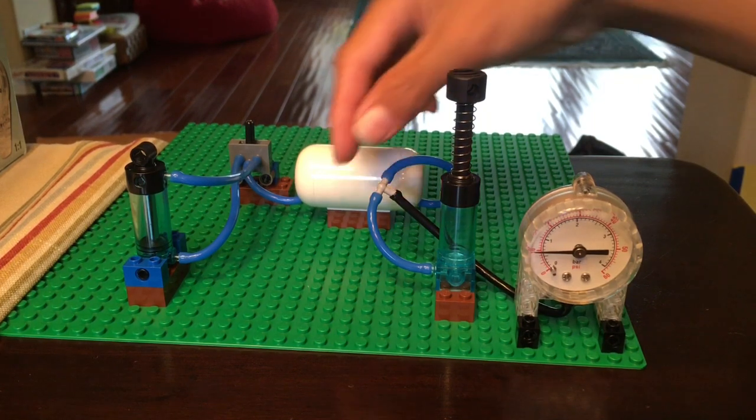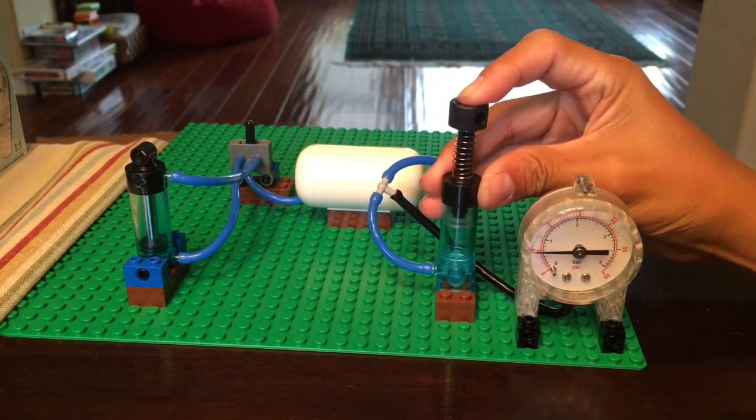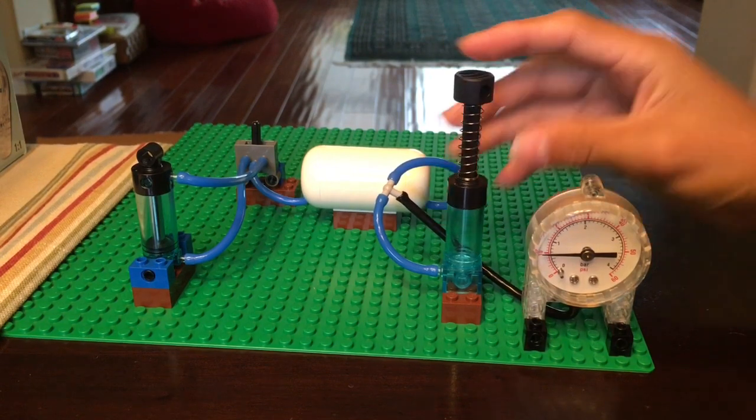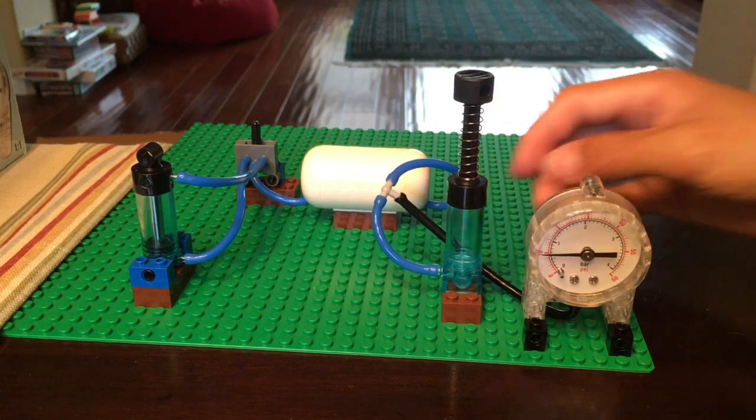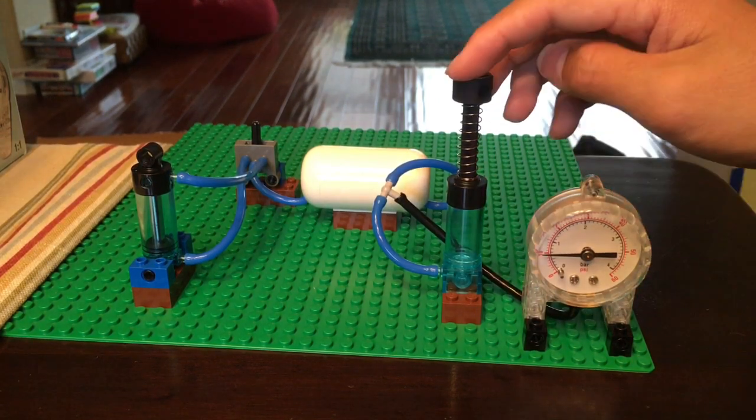So there is one input into the T tube coming from the hand pump, one input going into the gas tank from the hand pump, and one input going into the pressure gauge also from the hand pump.